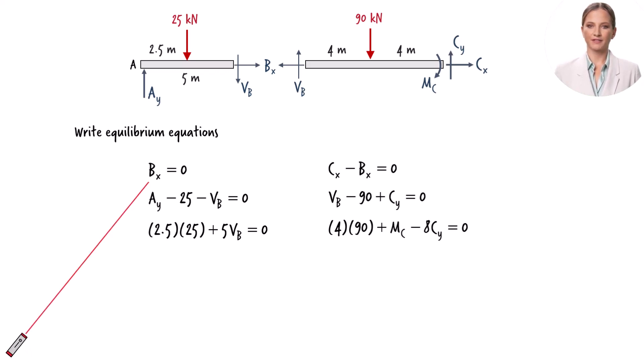The sum of forces in the x direction equals zero. Using this equation, we can deduce that C sub x is also zero. We can solve for V sub B using this equation. By substituting negative 12.5 for Vb in this equation, we can determine C sub y. Then, we can solve for M sub C using this equation.